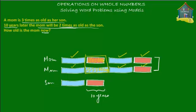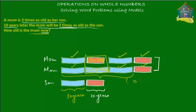Since the pink block equals 10 years, the blue block must also equal 10 years. Now we need to find the age of the mom now. The mom's current age is represented by three blue blocks, which equals 3 times 10 years — that's 30 years. So as of now, the mom is 30 years old.